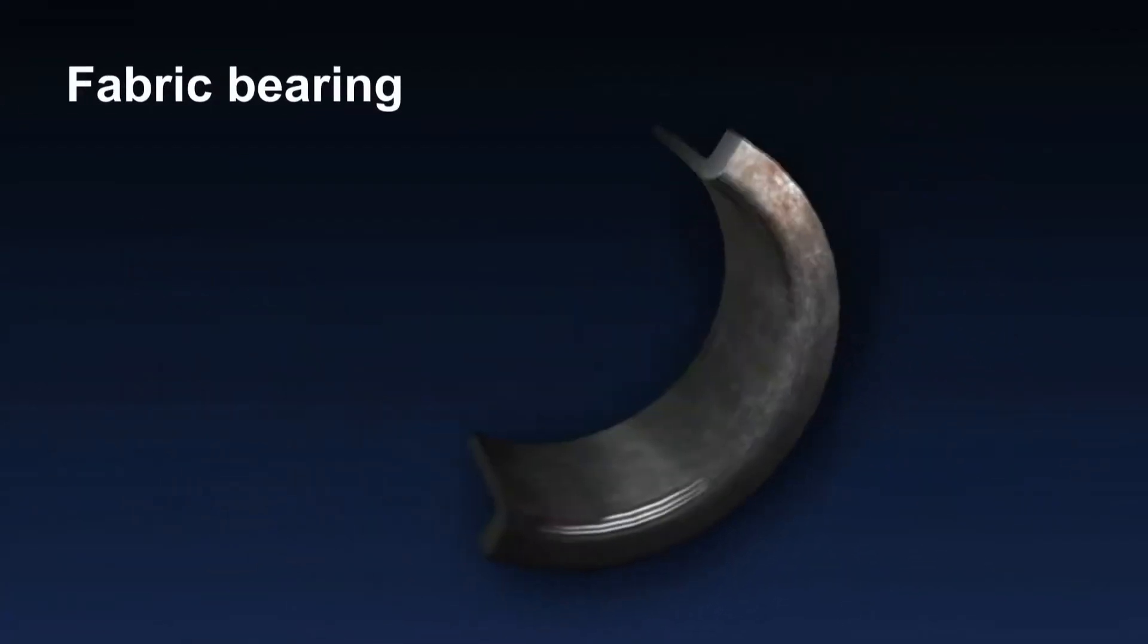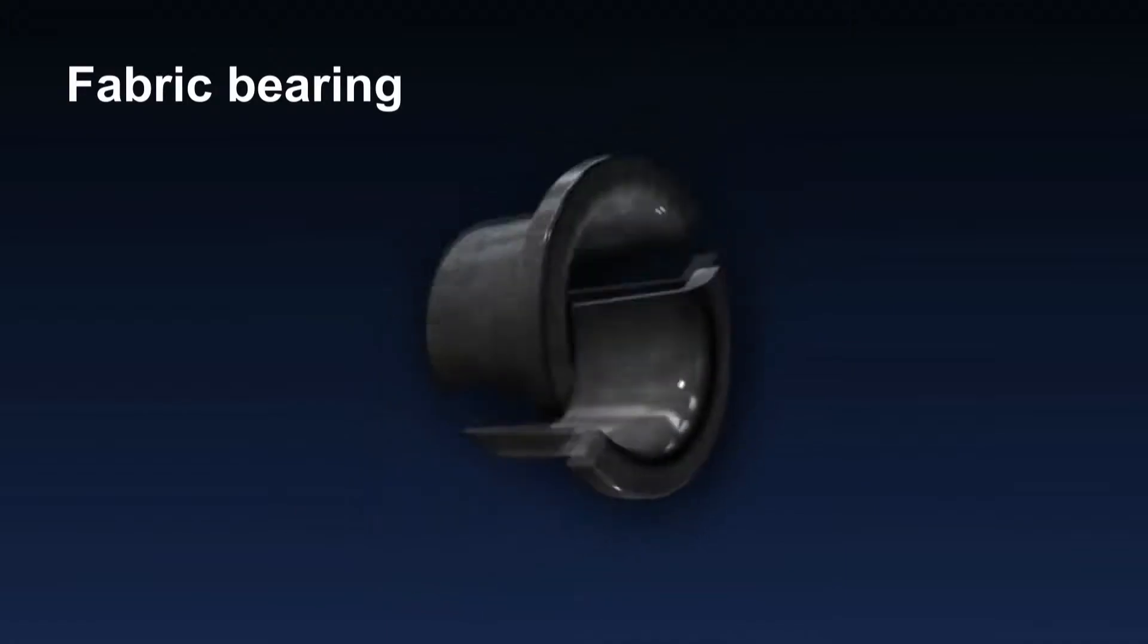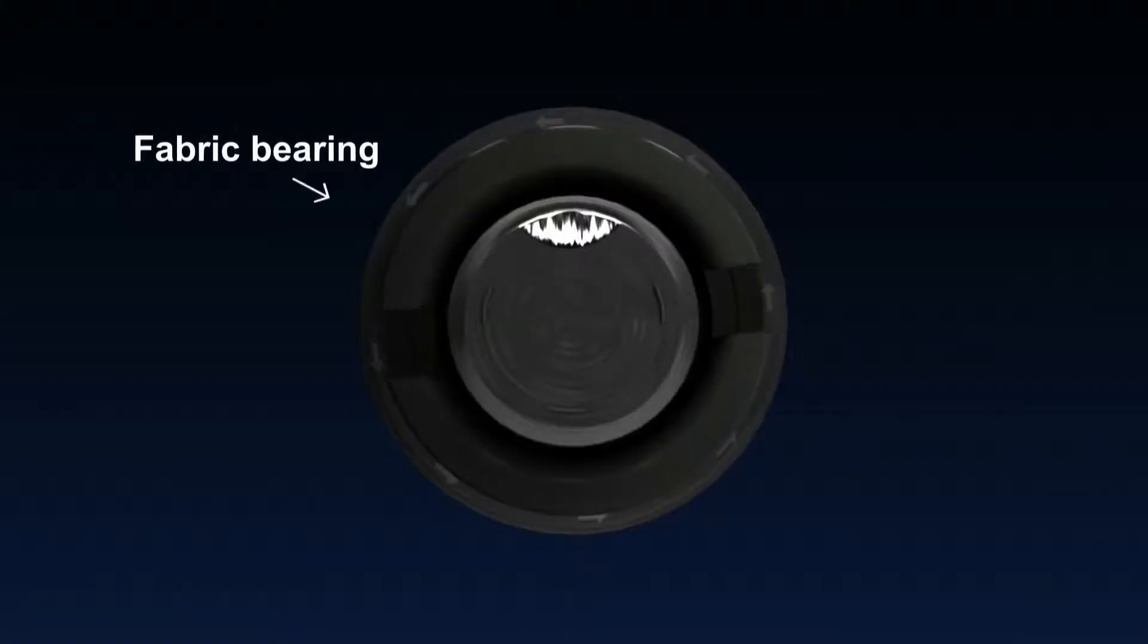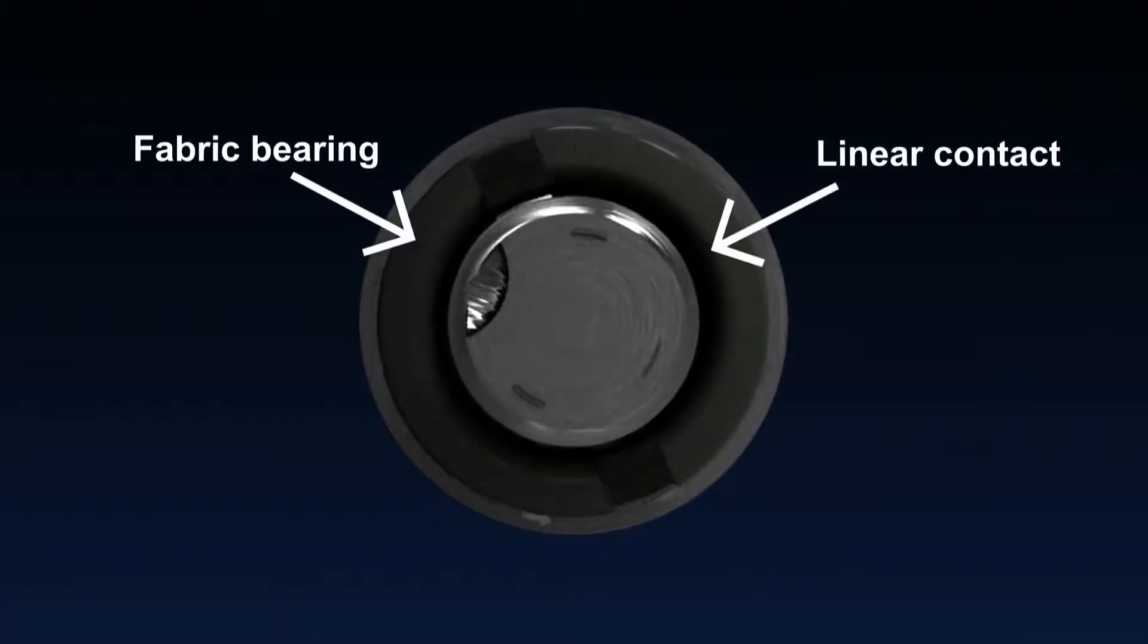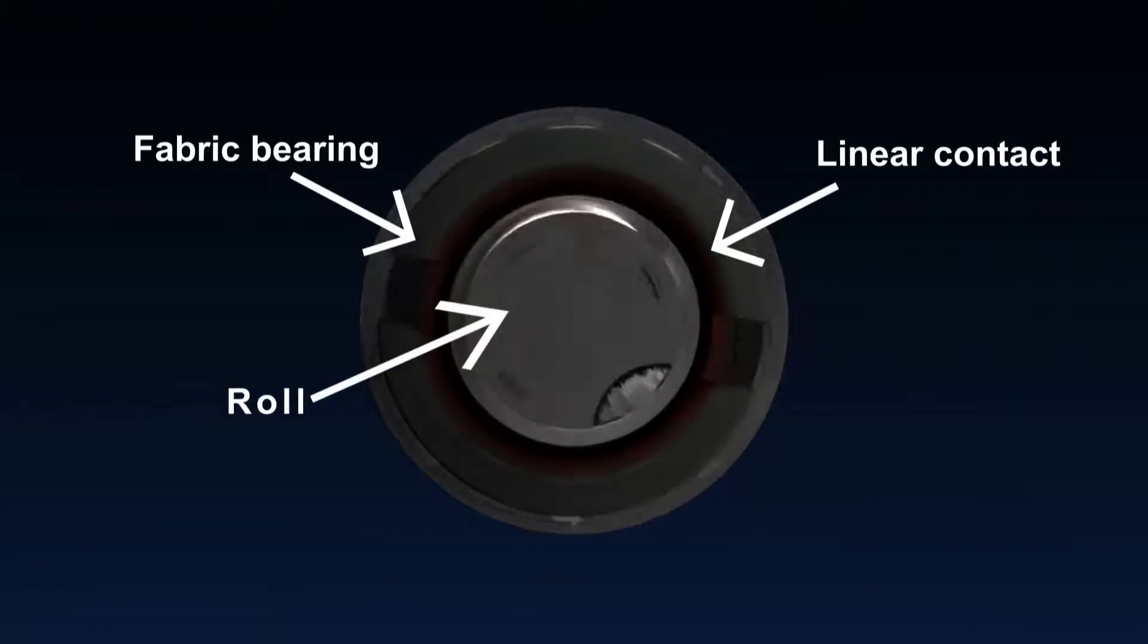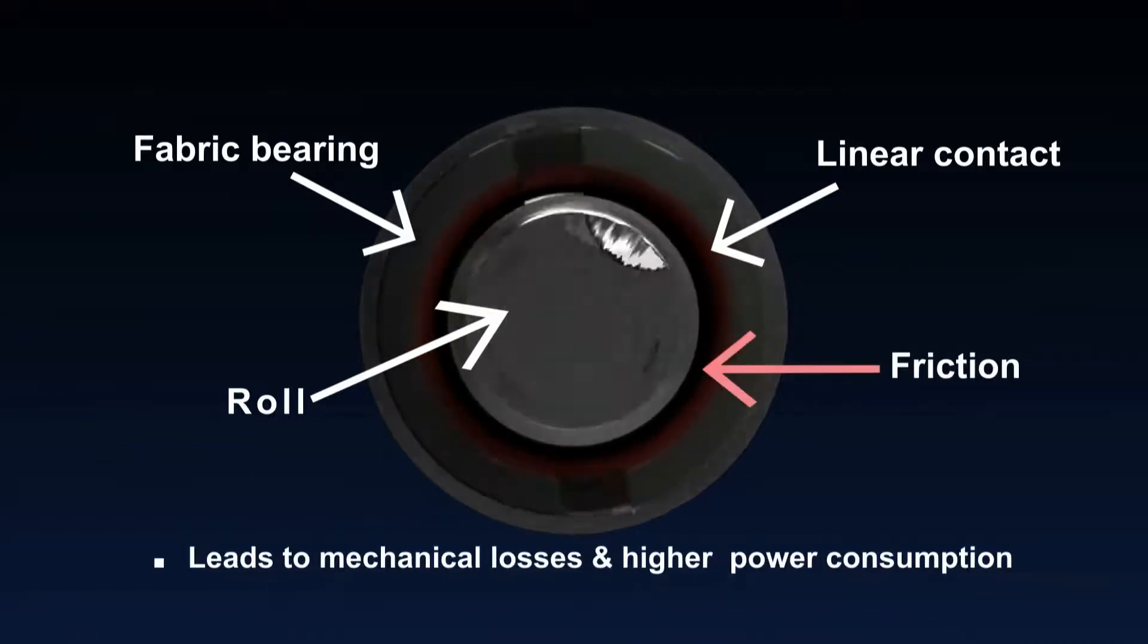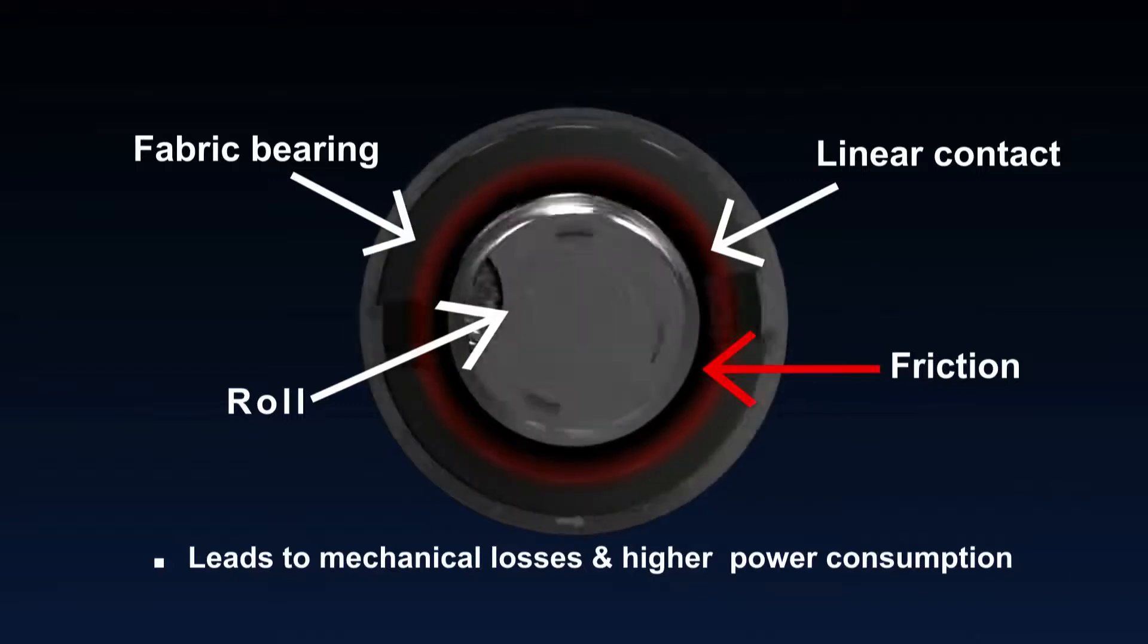Consequently, they take the form of shell bearings which are fitted into chocks. A fabric bearing is subjected to a linear contact with the rotating rolls, thus these bearings lead to more friction, thereby leading to significant mechanical losses and comparatively higher power consumption.